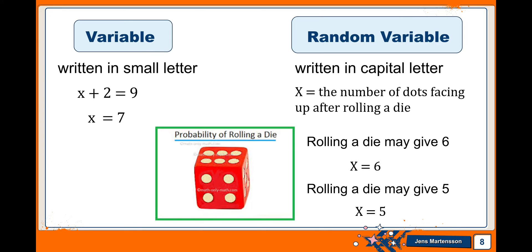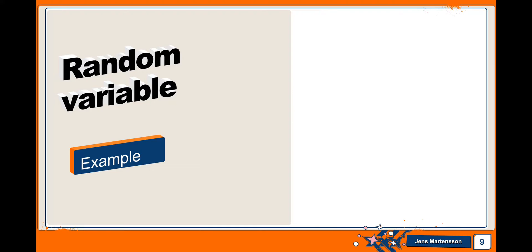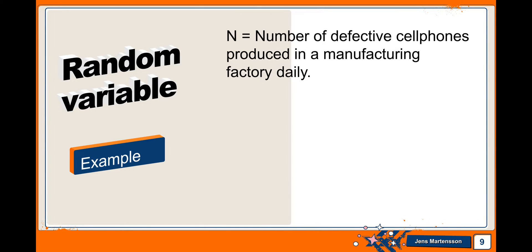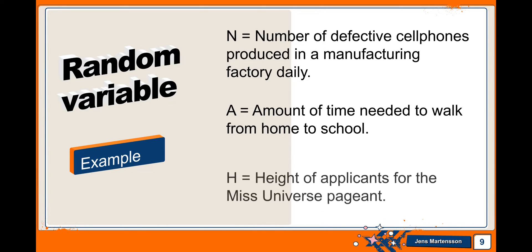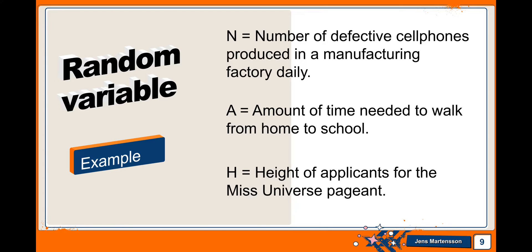We also consider X as a numerical type of data because the outcomes of the said random variable are numerical in nature. Example of random variable is the number of defective cell phones produced in manufacturing factory daily, A is the amount of time needed to walk from home to school, and H is the height of applicants for the Miss Universe pageant.